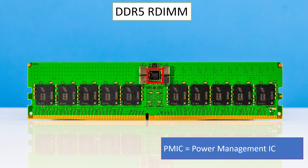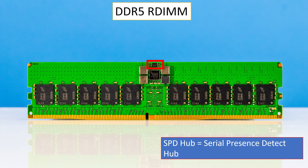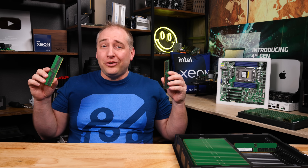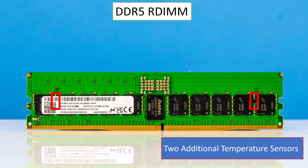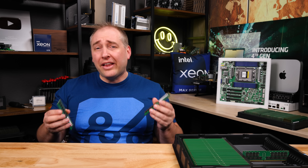Flipping the DIMMs over, you'll see the PMICs on the DDR5 DIMMs — you don't really have those on the DDR4 DIMMs, which is part of that power delivery difference we talked about. There's also an SPD hub that's much more robust than anything we've seen before. Now we have two additional temperature sensors — three temperature sensors total on a DDR5 DIMM versus just one on a DDR4 DIMM.